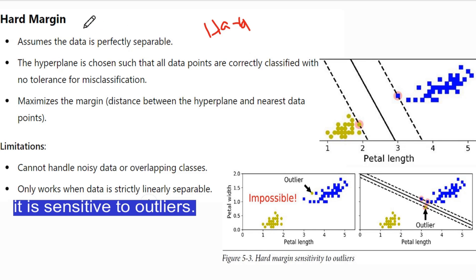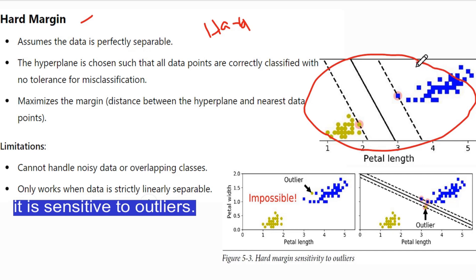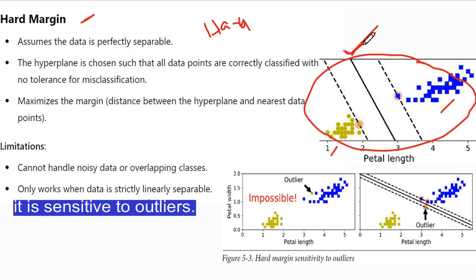Simply, hard margin means if we can correctly classify the data points with the help of a hyperplane — if you correctly classify both classes, it may be the blue class or the green class — if you correctly classify both classes with the help of the hyperplane, that hyperplane or that margin is called the hard margin.